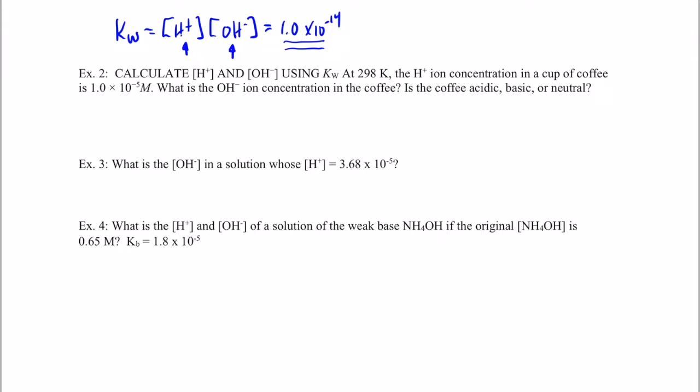Let's go ahead and do example number two. We are going to find the hydroxide concentration in a cup of coffee that has a hydrogen ion concentration of 1 times 10 to the negative 5th. Now the question is: is coffee acidic, basic, or neutral? We should be able to answer that because we're going to find out which concentration is higher — the hydrogen ion concentration or the hydroxide ion concentration. If the hydrogen ion concentration is greater, it's acidic. If the hydroxide concentration is bigger, it's basic. And if the two are equal, it's neutral.